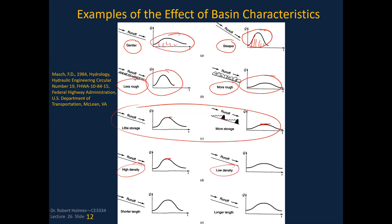Stream length also has an influence — a shorter watershed length versus a longer one affects the shape of the hydrograph.